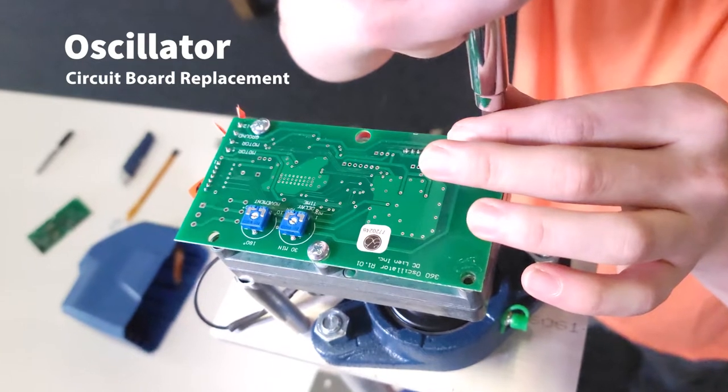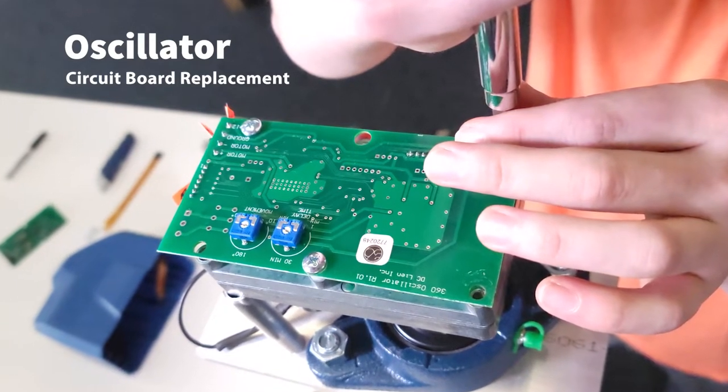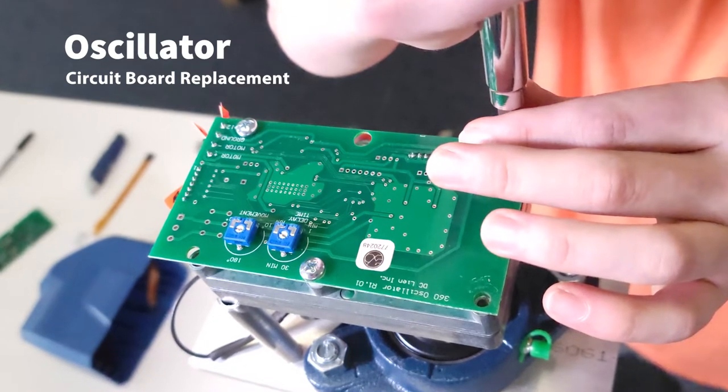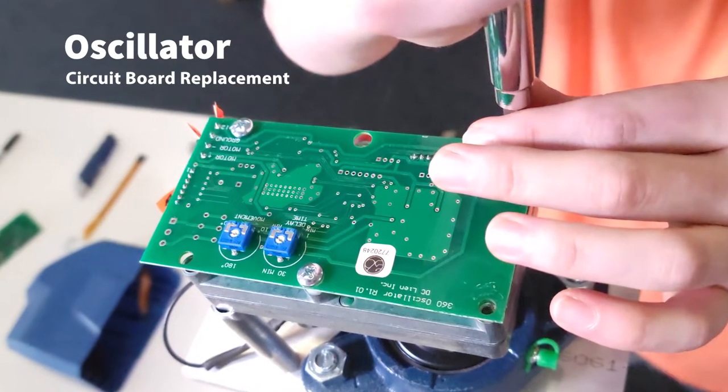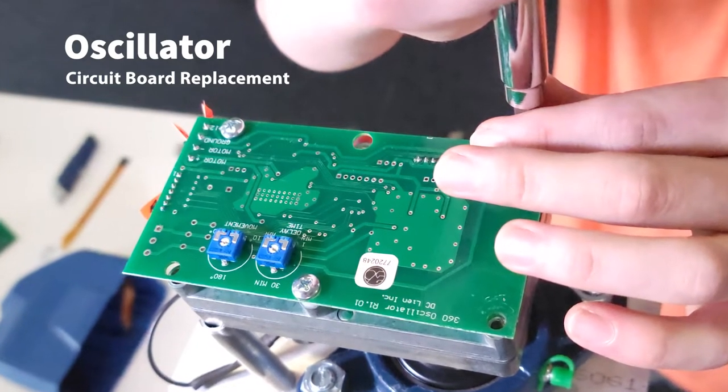Replacing a circuit board on your Scott aerator oscillator control takes just a few steps. You'll need a number two Phillips head screwdriver, a mini flat head screwdriver, and tape or labels for marking wires.